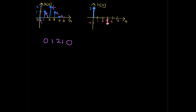Then we go to H[n], the impulse response function. This is a two. Make sure the first value of H[n] is under the second value of your X[n] function — so this two is going to go here. Then we have a zero, another zero, and then a negative one.